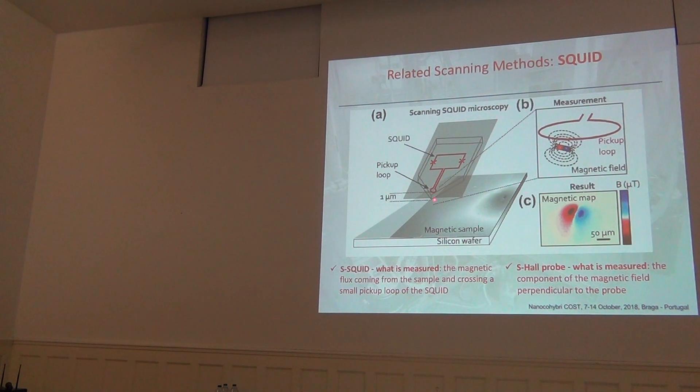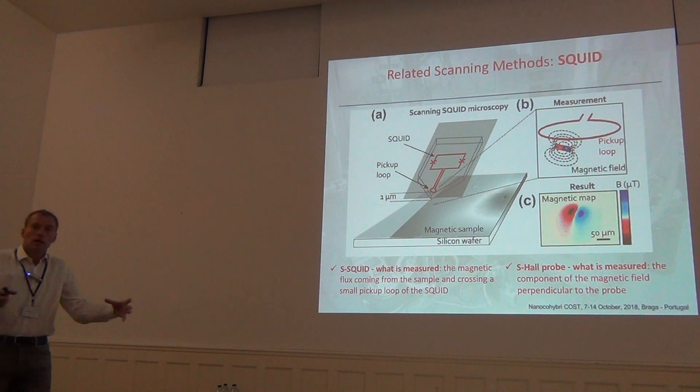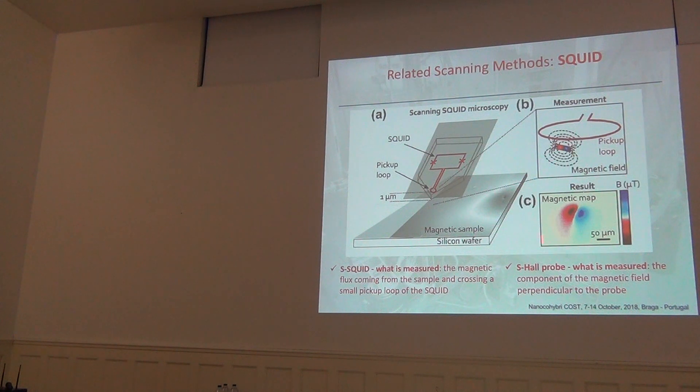And then, what you measure is, of course, a part of the flux that penetrates this pickup loop, that is usually made as small as possible in order to get a better spatial resolution. A variant of this method is a so-called scanning Hall probe microscopy in which the SQUID device is replaced just by a two-dimensional electron gas mounted in a Hall probe geometry, so you have a current that flows, and the electrodes are put perpendicular to the current, and then the Hall voltage can be registered as a function of position of this small Hall probe with respect to the sample, and then you have an imaging of the perpendicular component of the magnetic field.